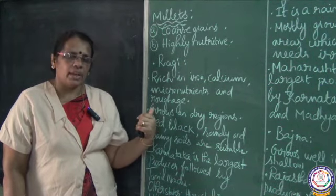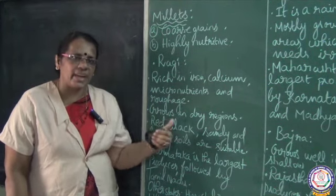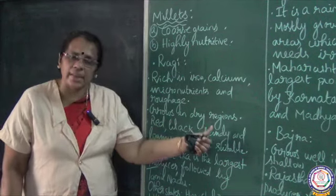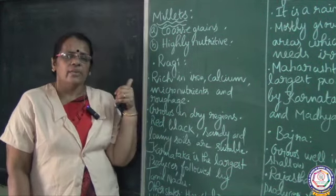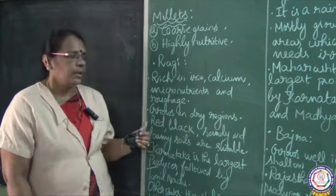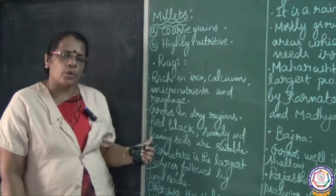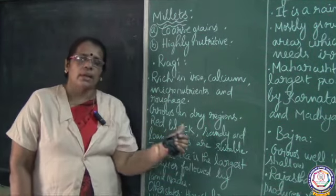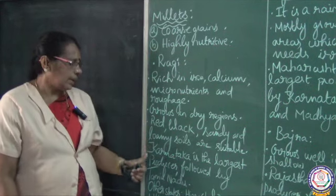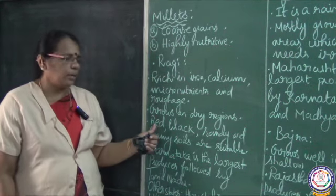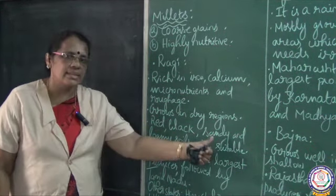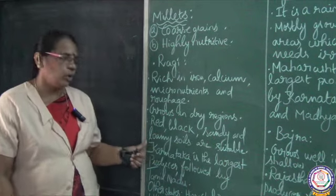When you talk about the regions where ragi is cultivated, it grows in dry regions — even in dry regions we can see ragi cultivation. The soils suitable for ragi cultivation are red soil, black soil, sandy soil and loamy soil.